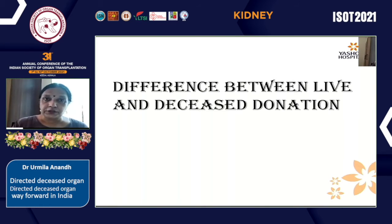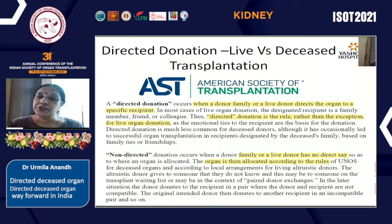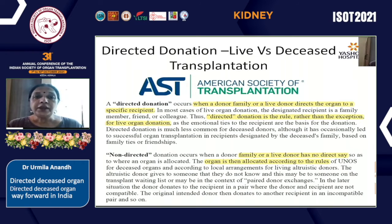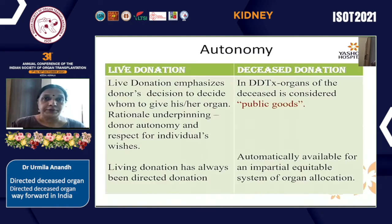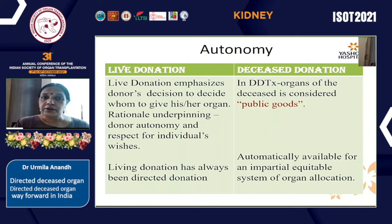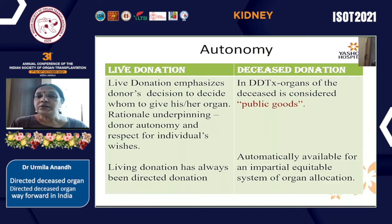So is there a difference between live and deceased donation? The American Society of Transplantation says that directed donation occurs when a donor family or a live donor directs the organ to a specified recipient. Directed donation is actually the rule rather than the exception for live organ donation. In contrast, non-directed donation may happen with live donors, but as we see even in our program, non-directed donation is the rule in deceased donor programs, because of the concept of autonomy.